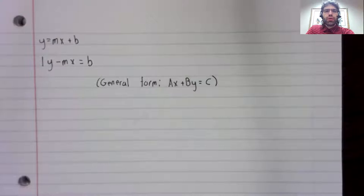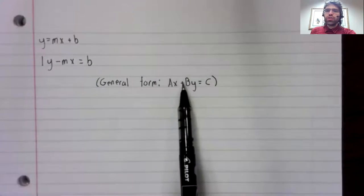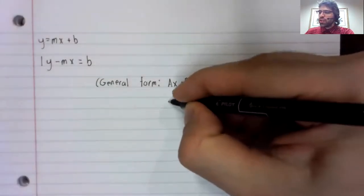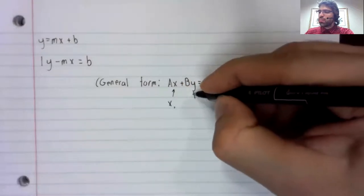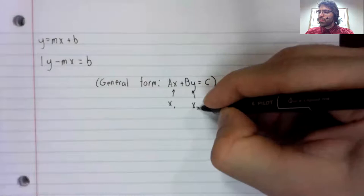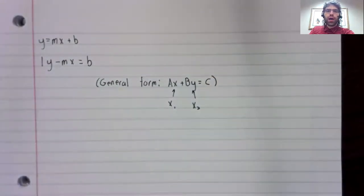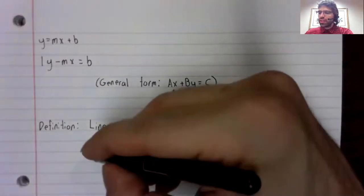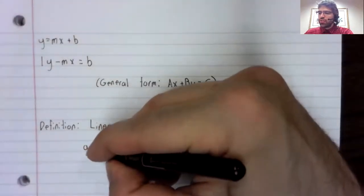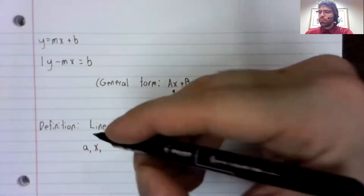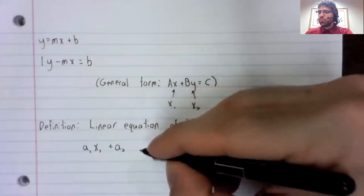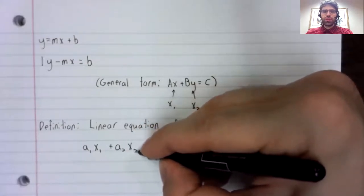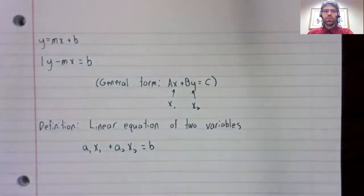In linear algebra, when we talk about linear equations, we'll always mean linear equations in the general form. And frequently we use x sub i in place of x and y. A linear equation of two variables has the form a sub one times x sub one plus a sub two times x sub two equals b.